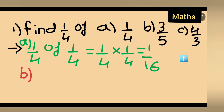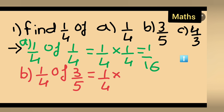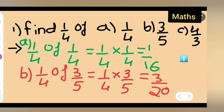Next, let us take b) one upon four of three upon five. How are you going to do this? One upon four multiplied by three upon five. Three ones are three, four fives are twenty, so your answer is three upon twenty. So b) one upon four of three upon five equals one upon four multiplied by three upon five, which gives three upon twenty.